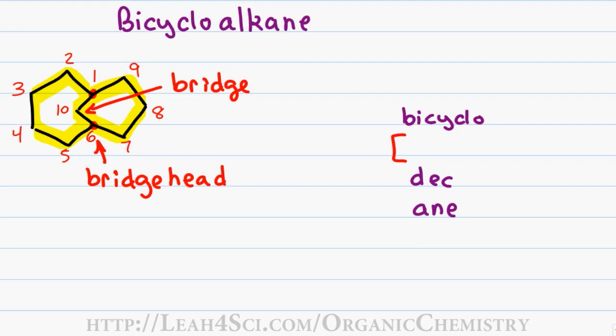You start with the largest ring and look for any carbons that are only part of that ring. That includes carbon number two, three, four and five. Since I have four carbons exclusive to the larger ring, I write four dot and then look to the right where I have three carbons, seven, eight and nine exclusive to the right ring which gives me a three. I have a single carbon exclusive to the bridge giving me a one.